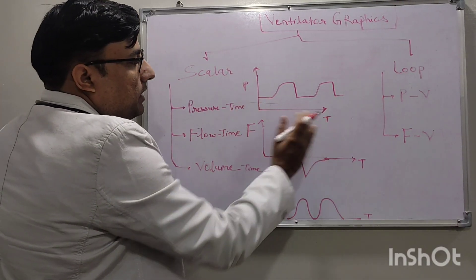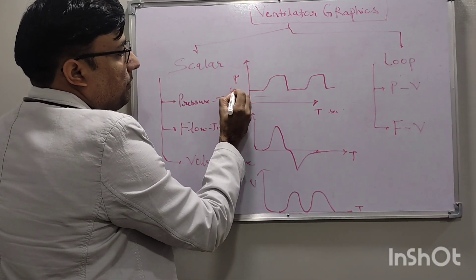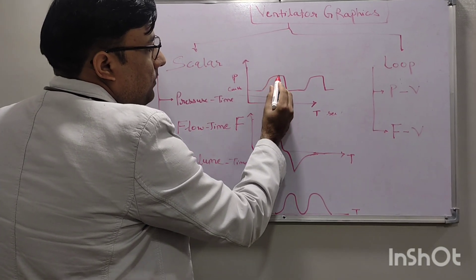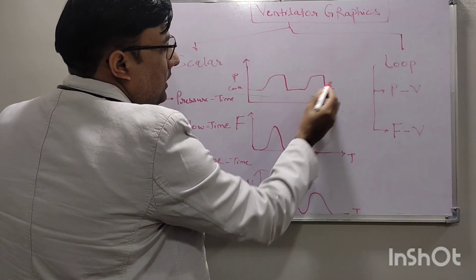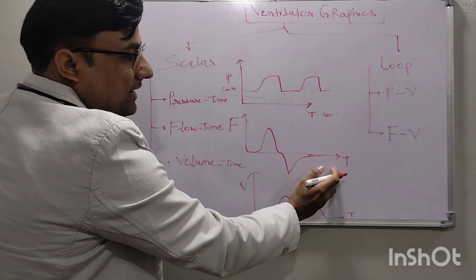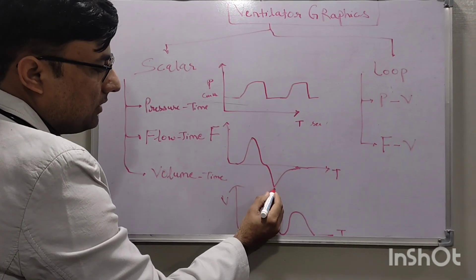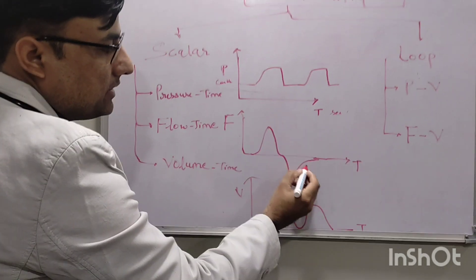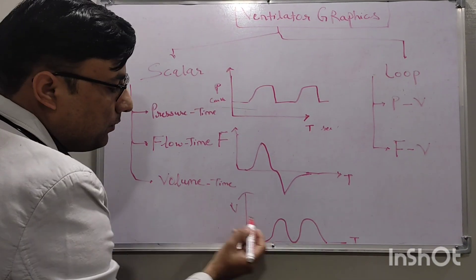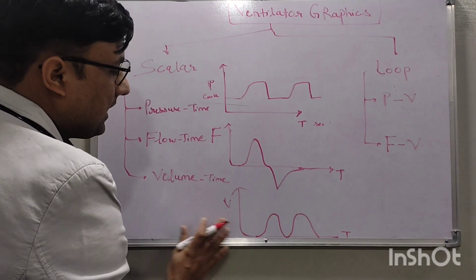In the pressure-time curve, on the x-axis will be the time in seconds and the y-axis will be pressure in centimeters of H₂O, showing PEEP and PIP. In the flow-time curve, the x-axis is time and y-axis is flow — inspiratory flow during inspiration, then expiratory flow. In the volume-time curve, the x-axis is time, y-axis is volume, and this represents the tidal volume.